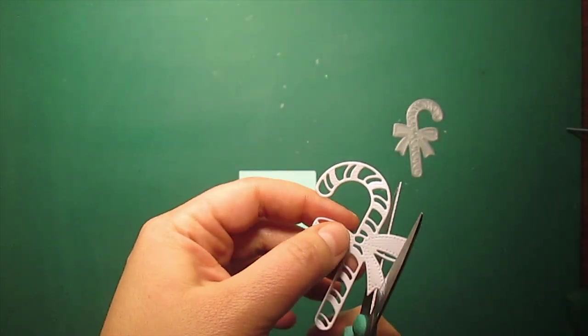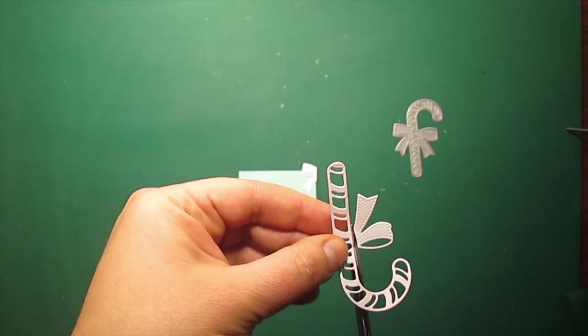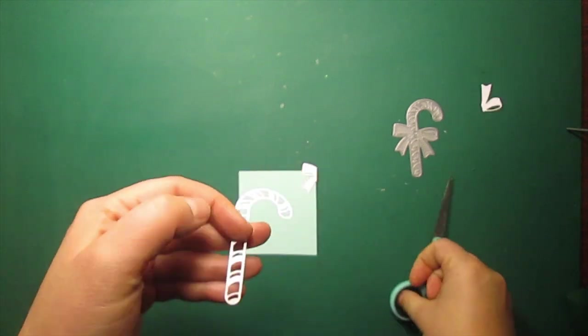This time I will show you what you can do if you have an intricate die but don't have a matching background. I am trimming the bow of this candy cane.